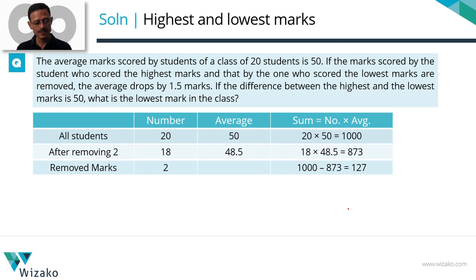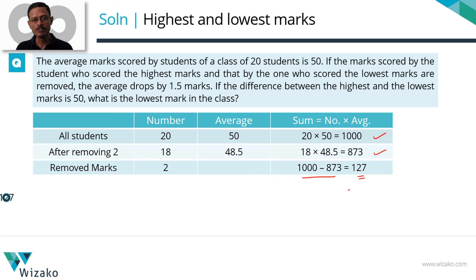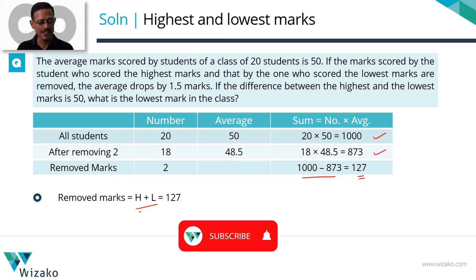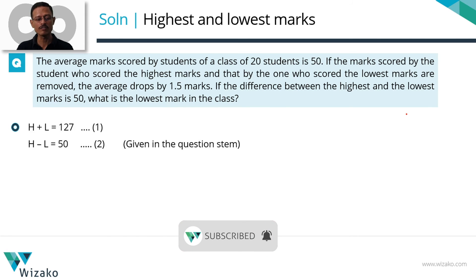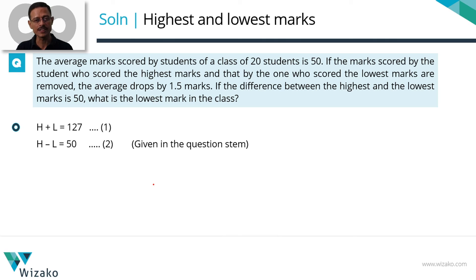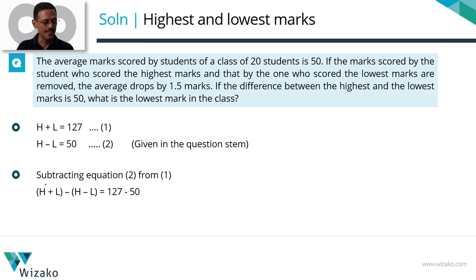To quickly summarize: the sum of marks of all 20 is 20 into 50, which is 1000. The remaining 18 after removing the highest and lowest marks have an average of 48.5, so their sum is 873. The difference of 127 represents the two removed marks. Highest plus lowest equals 127, and with H minus L equal to 50, subtracting gives 2L equals 77, or L equals 38.5.